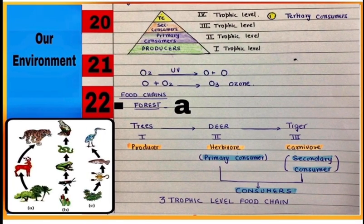In the next generation, 20 is showing different trophic levels in a food chain. Remember, producers are always at first trophic level, while herbivores are always at second trophic level. 21 is showing the steps involved in ozone formation in atmosphere, and 22 is 3 trophic level food chain in a forest.